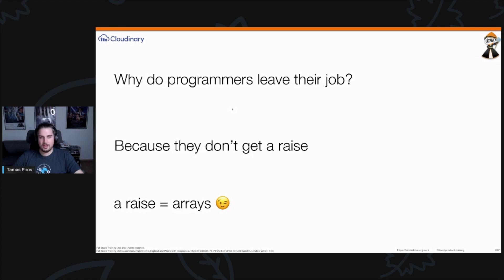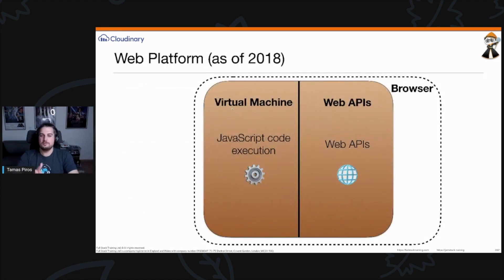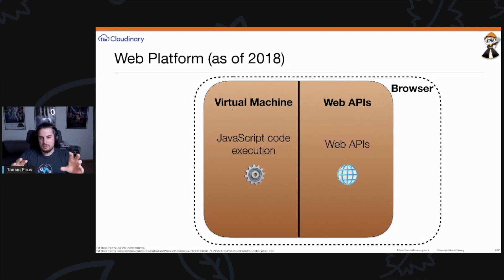On a more serious note — if you think about the web platform as it was two or three years ago, back in 2018, the execution engines you had in the browser were essentially two things: a bunch of web APIs — like the fetch API, notification API, at least 20 or more web APIs that you can use in JavaScript in the browser.